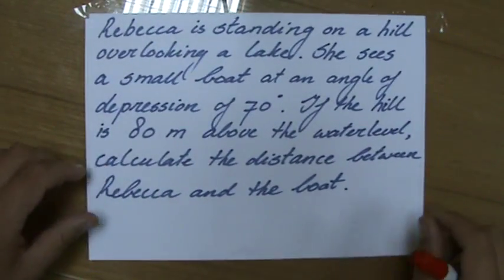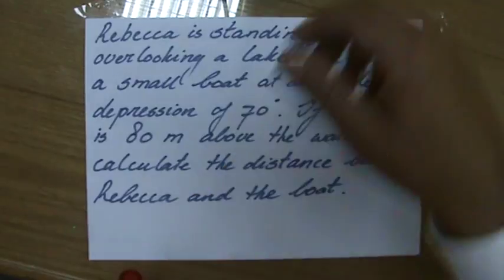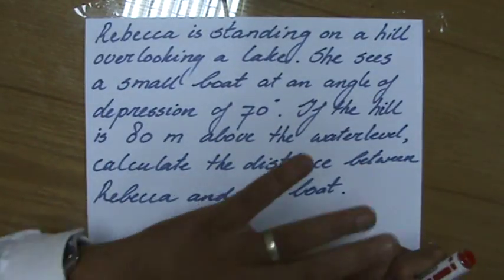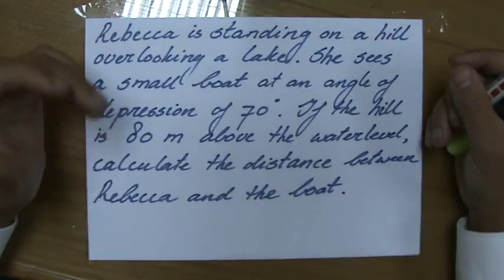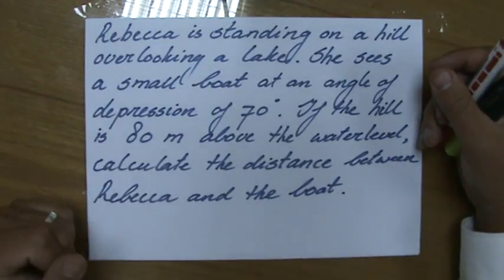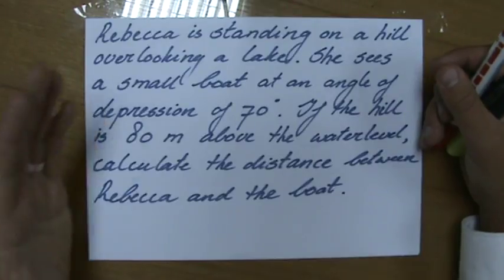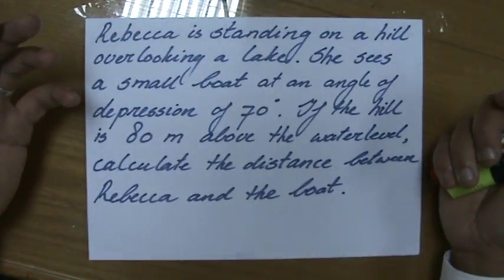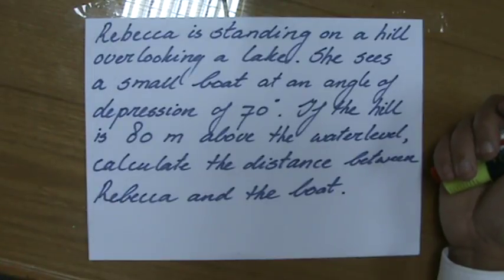Let's have a look at a typical question involving these angles. It says Rebecca is standing on a hill overlooking a lake and she sees a small boat at an angle of depression of 70 degrees. If the hill is 80 meters above the water level, calculate the distance between Rebecca and the boat.